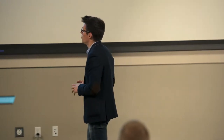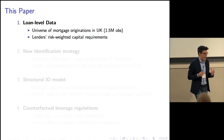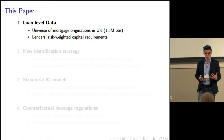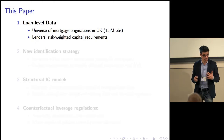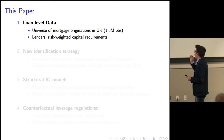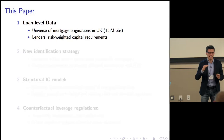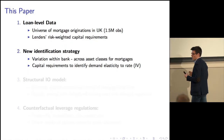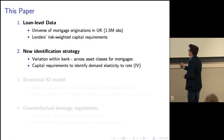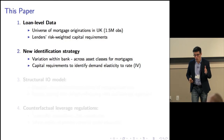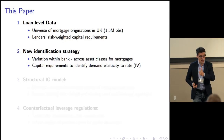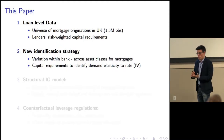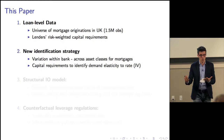To answer these questions, in a first step I'm going to leverage on a unique dataset for the UK — basically the universe of mortgages, 1.5 million originated in 2015 and 2016 — with very detailed data on the capital requirement not only at the lender level like many other papers, but at the product level. This is going to be key for my identification strategy, which exploits variation not only across banks but also within a bank across products with different leverage, and in this way I'm going to use this variation to identify the demand elasticity of borrowers to the interest rate.